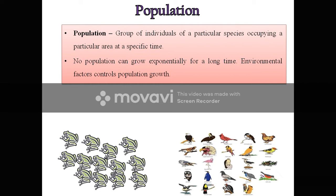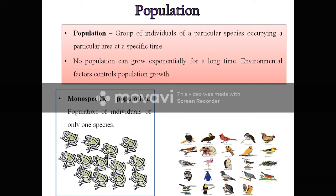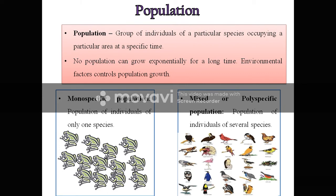Population can be monospecific — a population of individuals of only one species, for example one species of frog. The second type is mixed or polyspecific population — a population of individuals of several species together. For example, several species of birds together are called a polyspecific population.